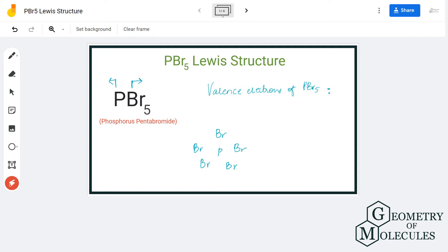To understand the Lewis structure for this molecule, we will first check the total number of valence electrons. Phosphorus atom has five valence electrons in its outer shell, and bromine atom has seven valence electrons in its outer shell.